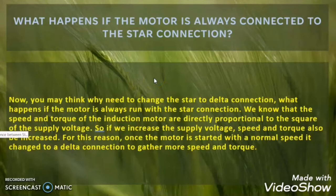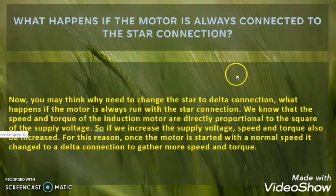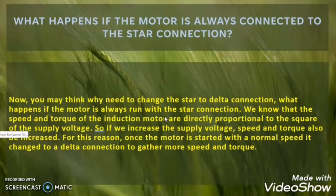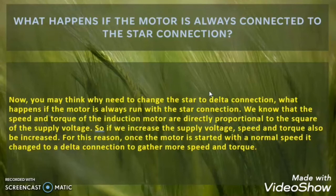No, the problem will not be solved. Suppose we connect the motor winding in star connection throughout — during starting as well as during running. Then what will happen? The motor speed and torque are proportional to voltage squared. In star configuration, the voltage across the winding is reduced. So the speed and torque of the motor will also reduce. The purpose of the motor is to do mechanical work. If we keep the motor in star throughout, we completely ignore the mechanical output. The speed and torque will be less all the time — this is not a sensible decision. We cannot compromise the mechanical output of the motor due to an electrical problem.